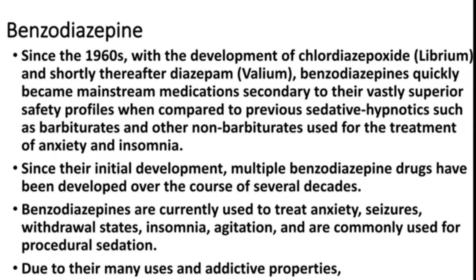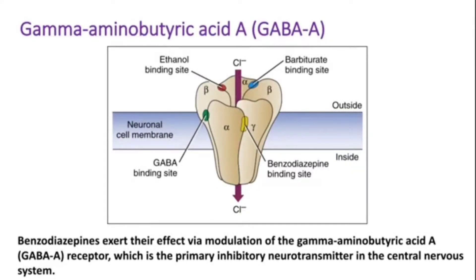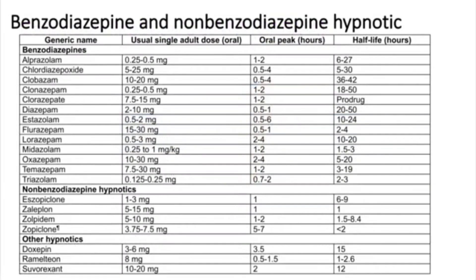Toxicity mainly occurs in patients who are taking these tablets for withdrawal states and insomnia. Benzodiazepines mainly act on the GABA-A receptors — gamma-aminobutyric acid-A receptors — which is primarily an inhibitory neurotransmitter in the central nervous system. Many hypnotic drugs are classified as benzodiazepine groups and non-benzodiazepine groups.